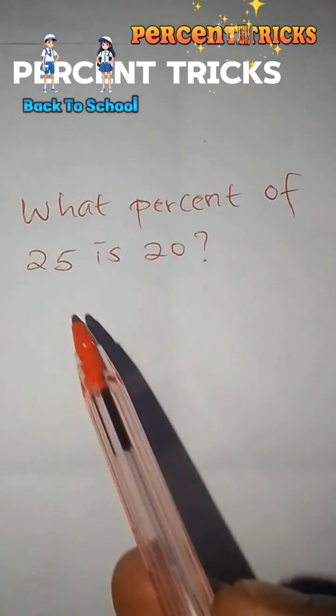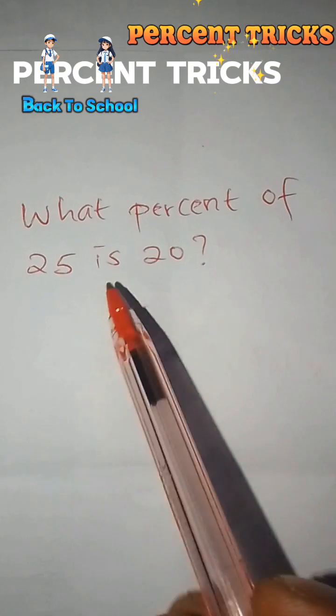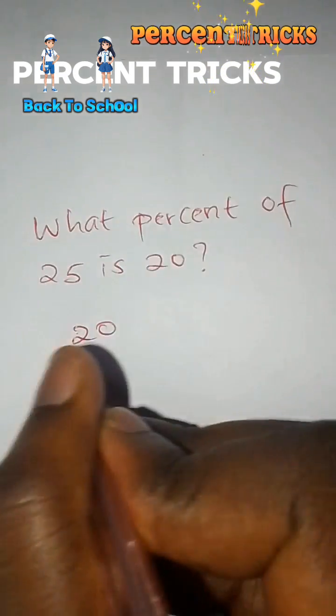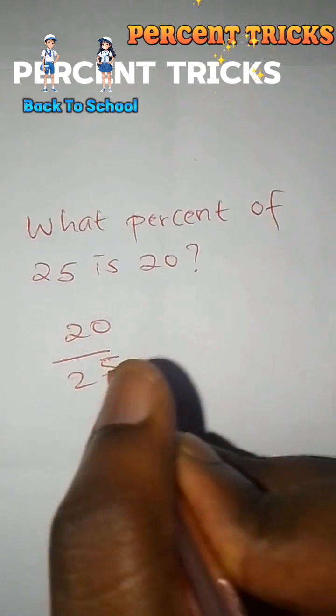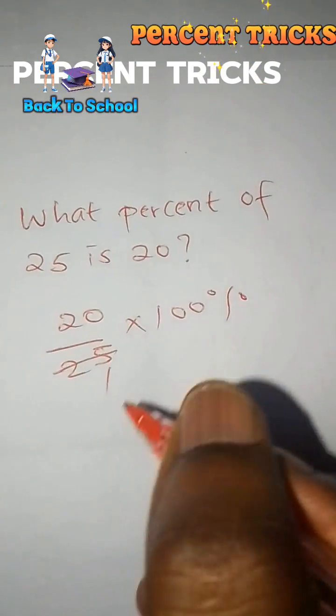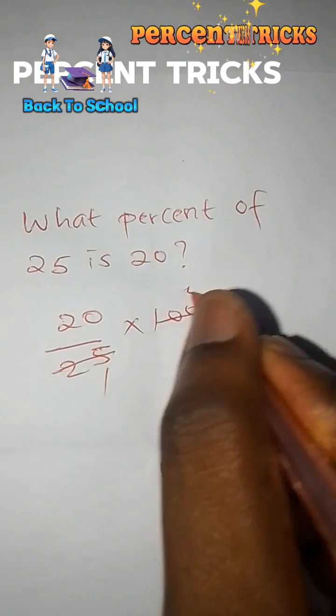So the answer is 60. What percent of 25 is 20? So a number after 25 is 20. We shall have 20 over 25 multiplied by 100 because they want the percentage. So 25 here once, 25 goes into 100 4 times.